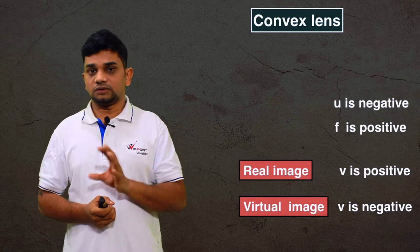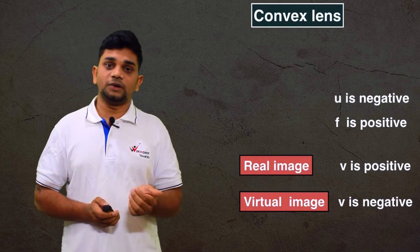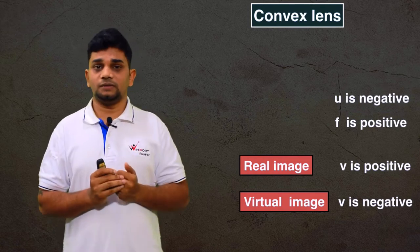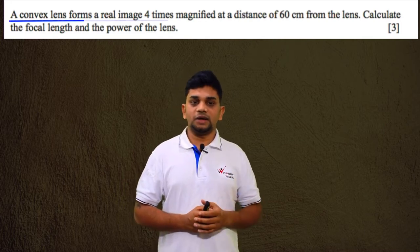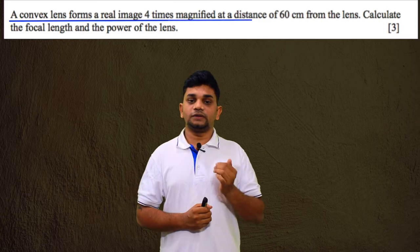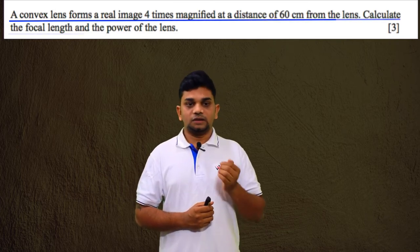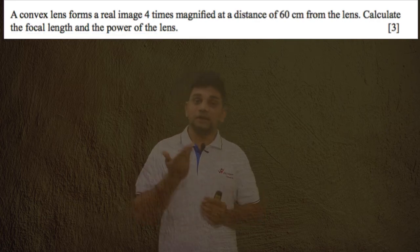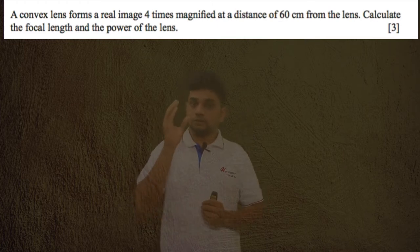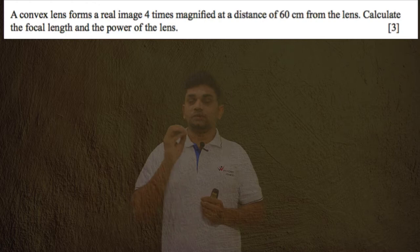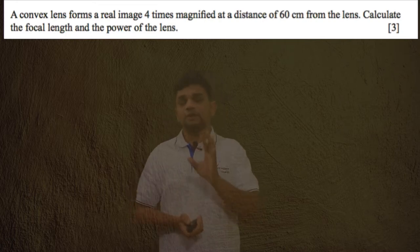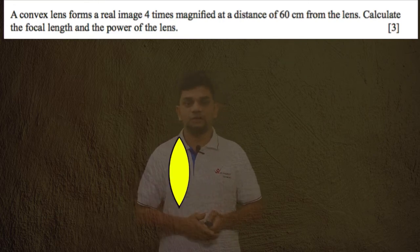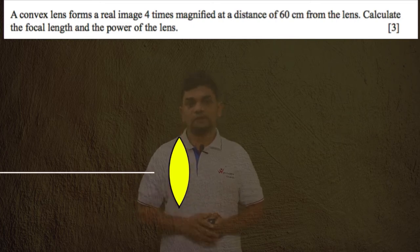Let us discuss some examples to make all the numericals easy. First question: a convex lens forms a real image four times magnified at a distance of 60 centimeters from the lens. Calculate the focal length and power of the lens. When you get a problem, imagine everything in your mind — draw a convex lens, fix the position of the object, and fix the image. I am drawing a rough diagram here: this is the convex lens and this is the principal axis.